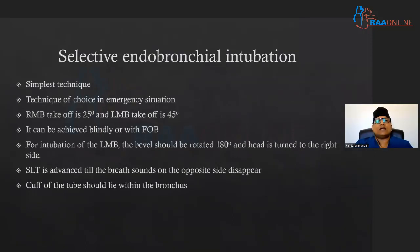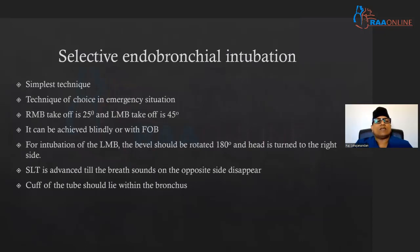Selective endobronchial intubation was one technique used when you don't have the equipment or expertise. This is the simplest technique and the technique of choice in an emergency situation. If you remember adult anatomy, the right upper main bronchus takeoff is at 25 degrees and the left side is at 45 degrees. This can be seen in an older child, but in a smaller child or infant, you can have it at 55 degrees angle with each other. This can be achieved blindly or with the help of a fibre-optic bronchoscope.